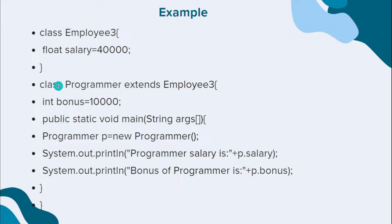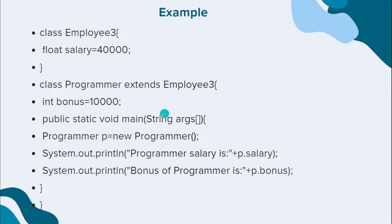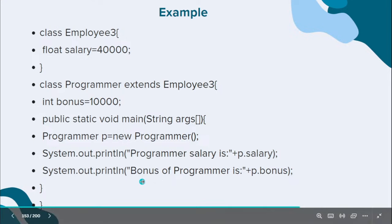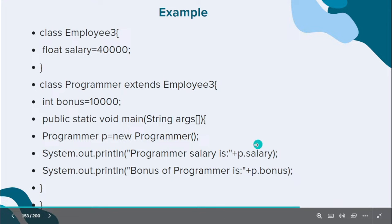Then I define a new class called Programmer, which extends the Employee class. Inside this child class, I initialize a bonus variable — for example, int bonus equal to some value. In the main method, which is where JVM starts program execution, I create a Programmer object: Programmer p = new Programmer(). I then access p.salary and p.bonus, which will be printed at the output.